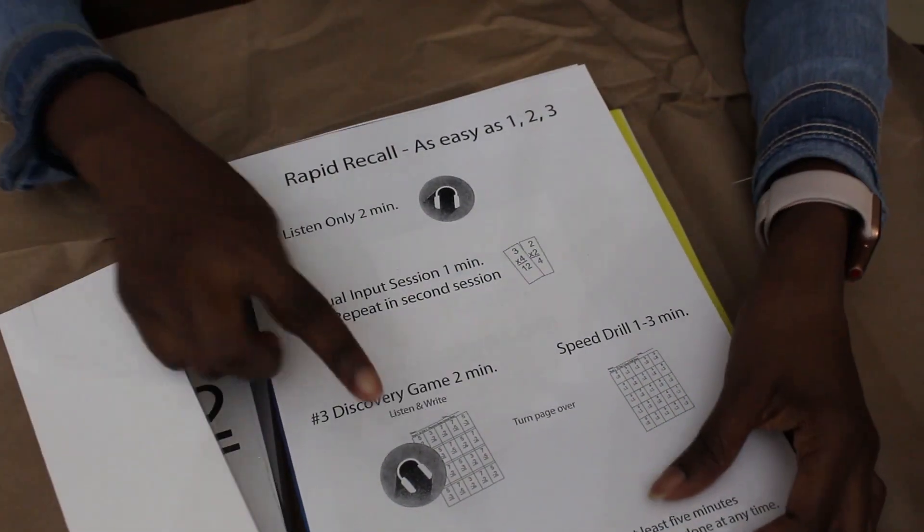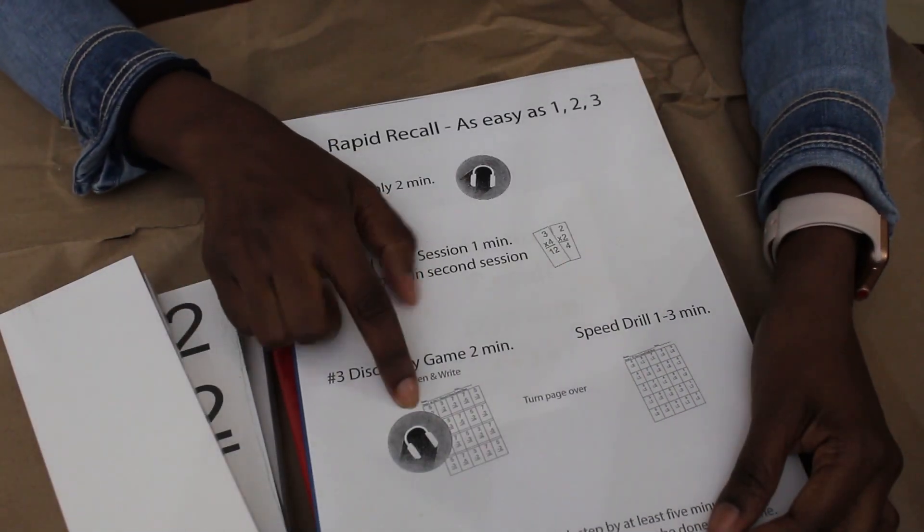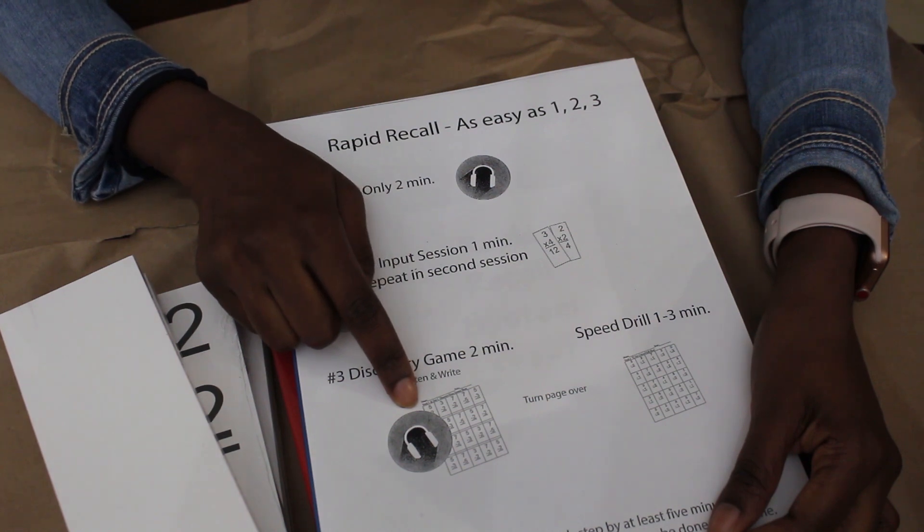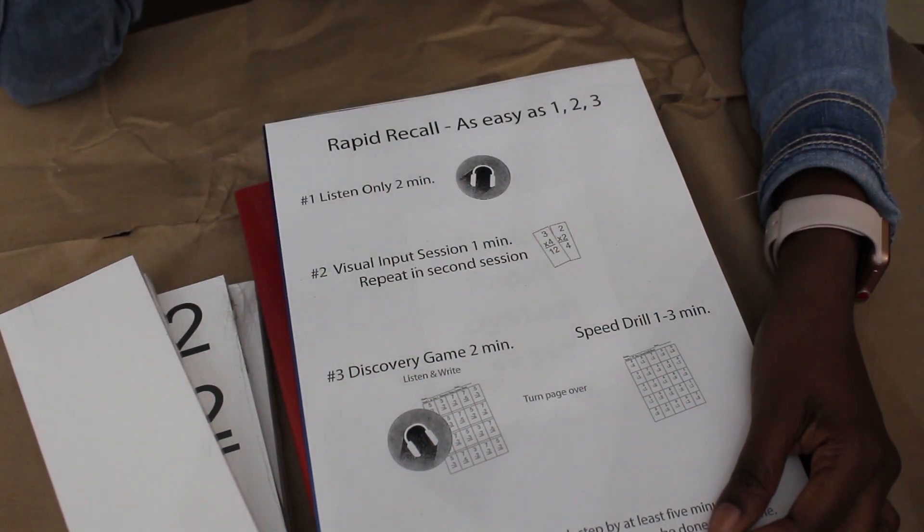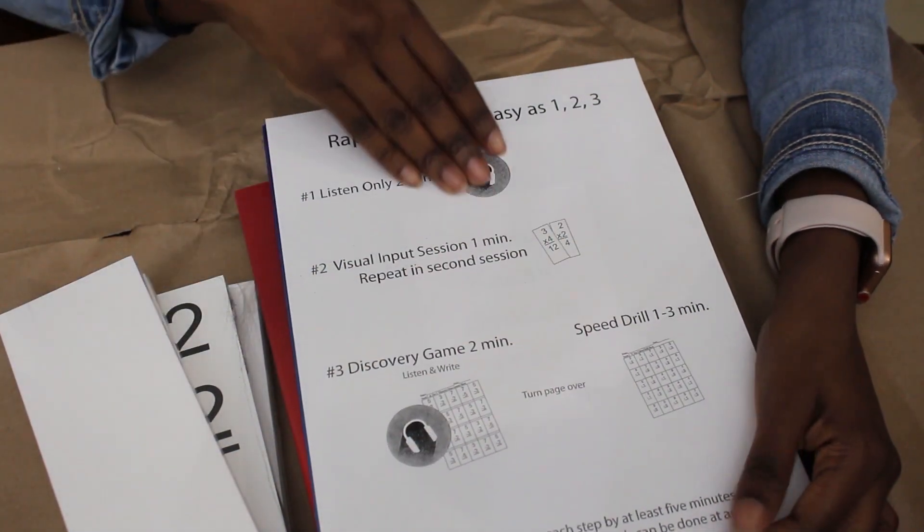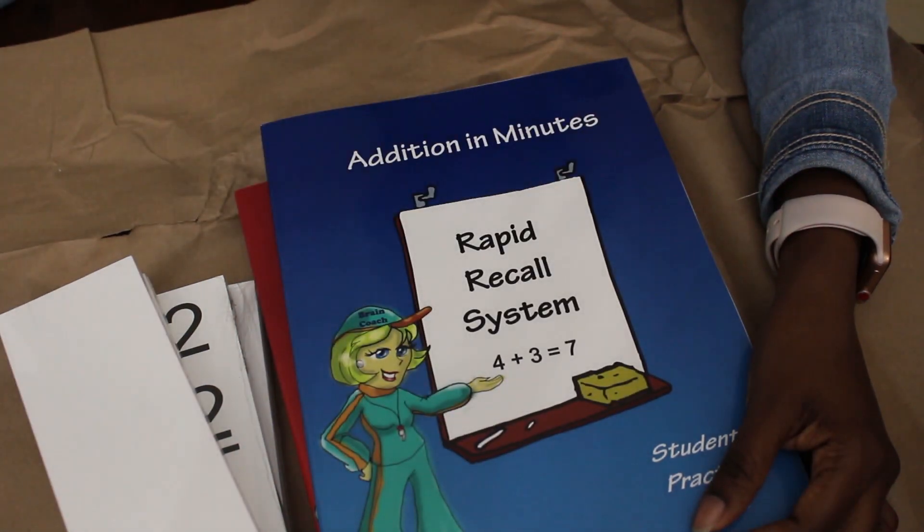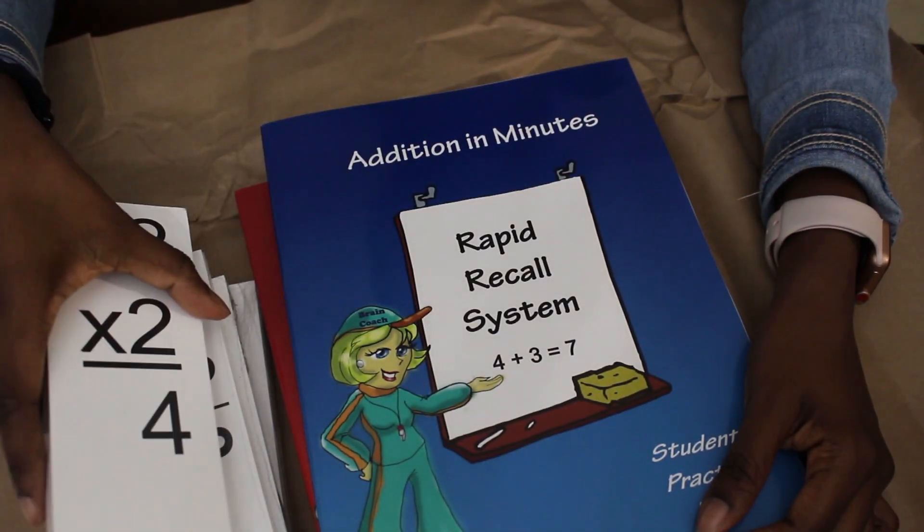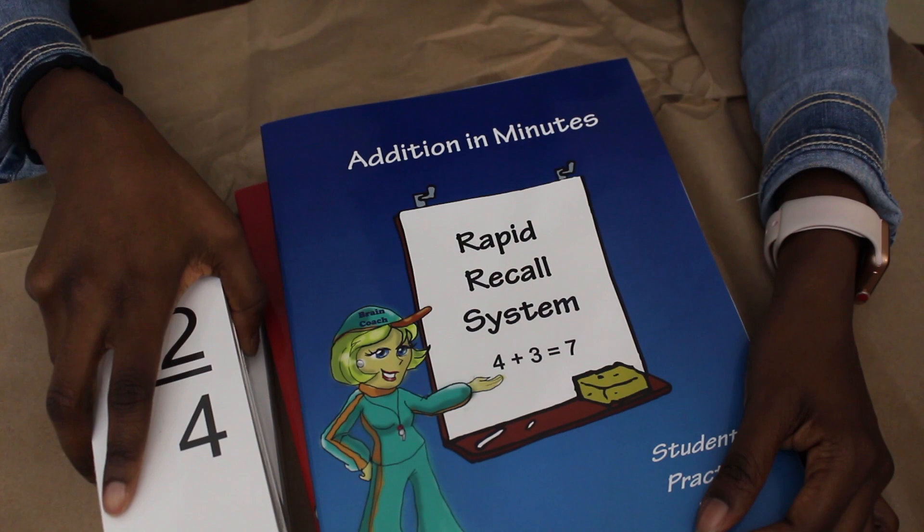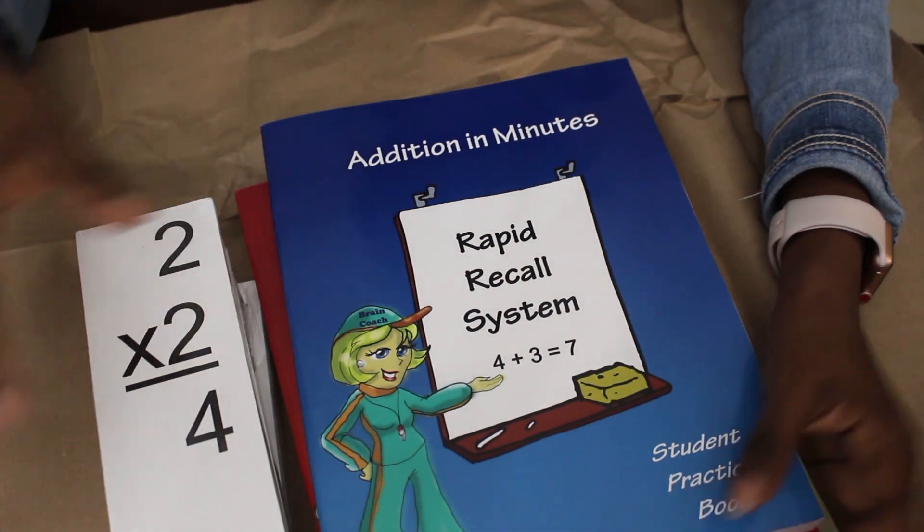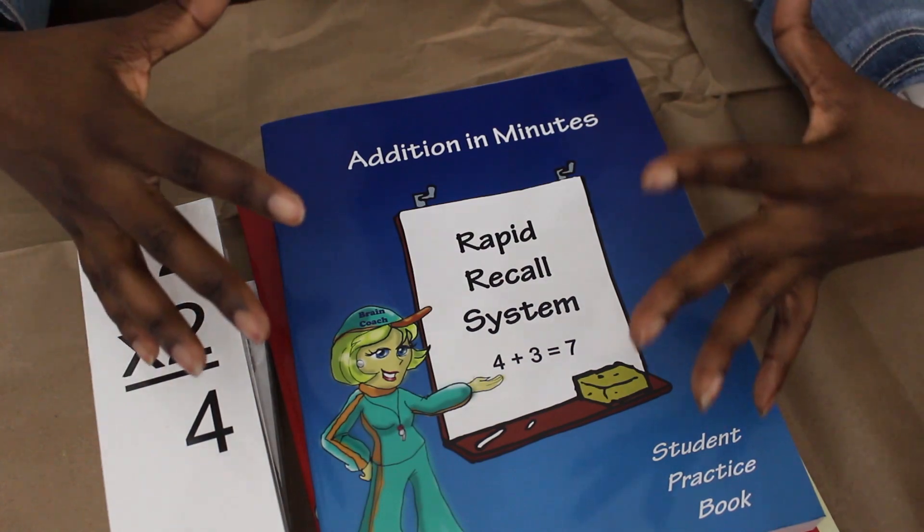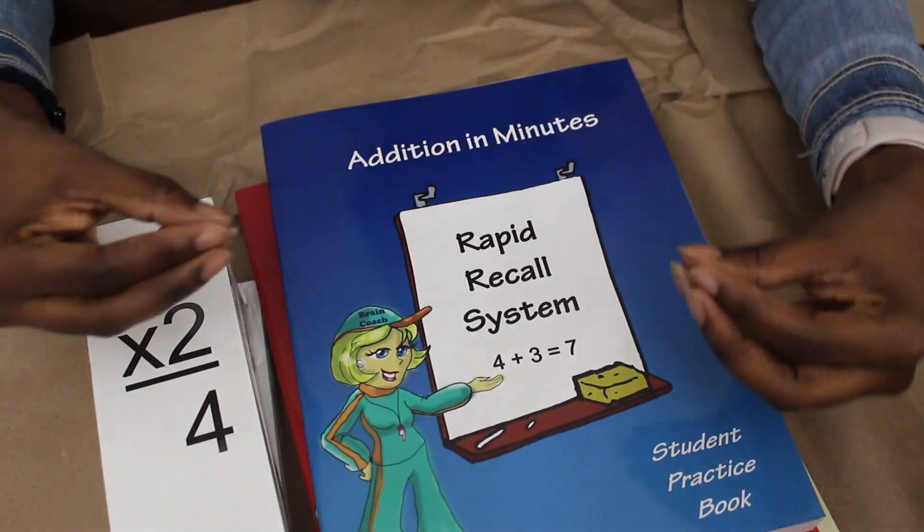and they also have an auditory part, or whether it's speed drills where they'll be hearing the math facts while they write down the answers. So whether it's visual, auditory, or kinesthetic, it allows multiple sources and ways of inputting the information before it expects output from the